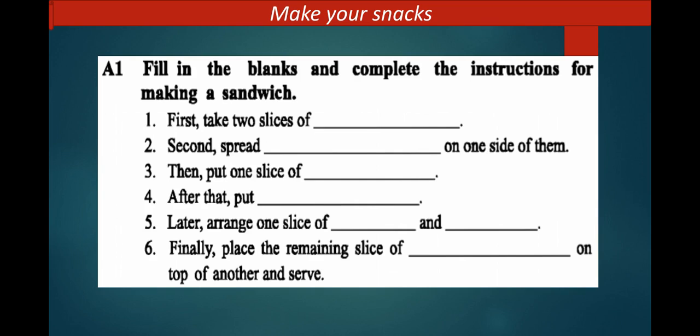Number five: later arrange one slice of cucumber, one slice of tomato and two slices of cucumber on the egg. Number six: finally place the remaining slice of bread on top of another and serve.